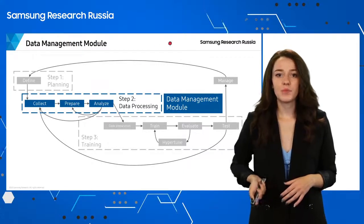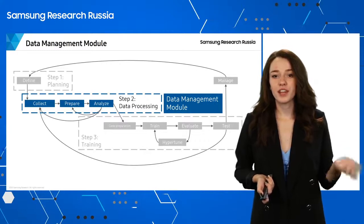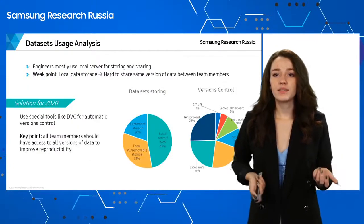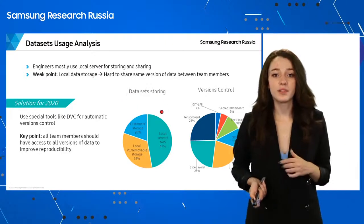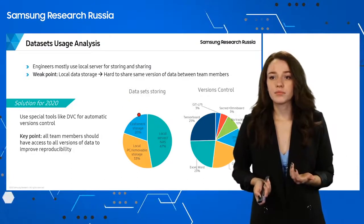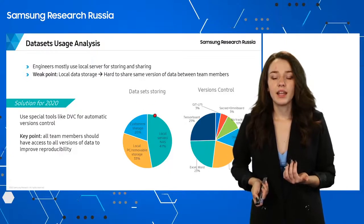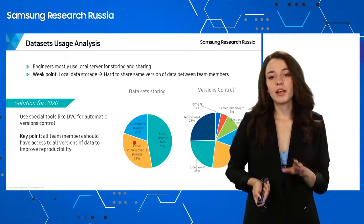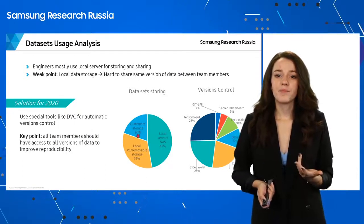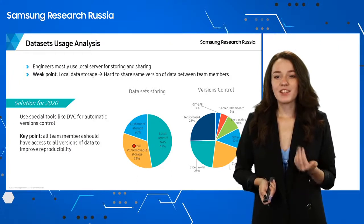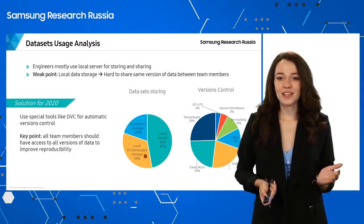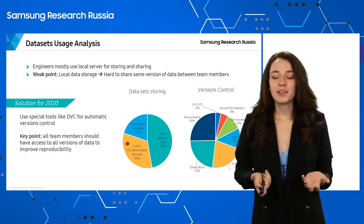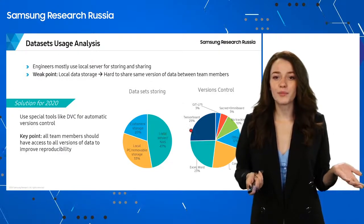Let's go to the next one: the data management module. As I mentioned, data should be versioned and accessible to everyone on the team. Looking at how it was one year ago in a few of our AI teams: I asked where they store data. Many stored it on a local server or on the customer's server, but about one third of respondents said they have many data versions on their local PC, which is a problem because other team members do not have access.